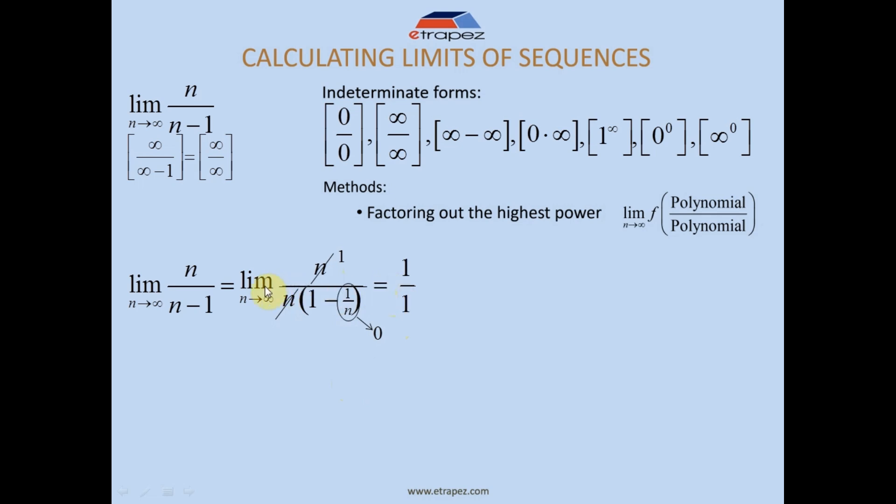Notice that without the limit, here I copied the limit and here I didn't. On the top there will be 1, and on the bottom what? 1 minus 0, because it approaches 0. 1 minus 0 gave 1, so I write 1. 1 divided by 1 equals 1.